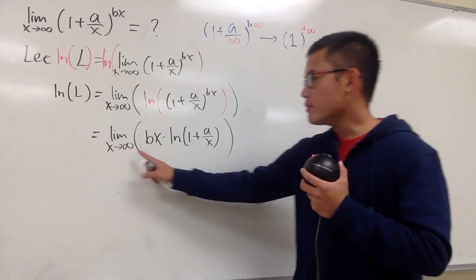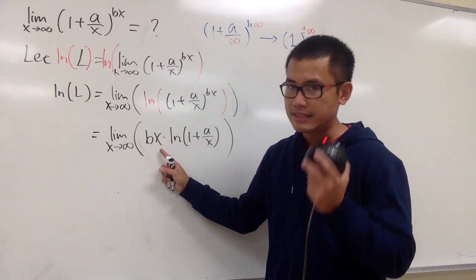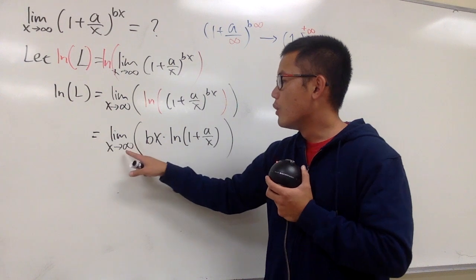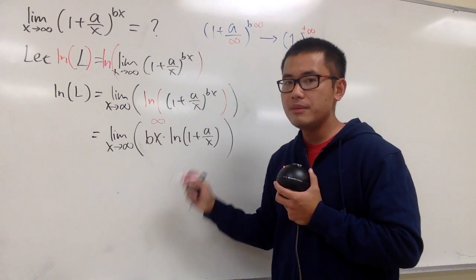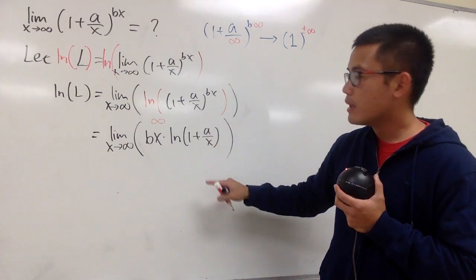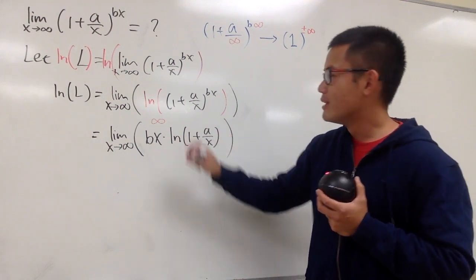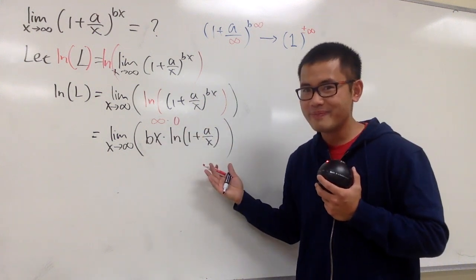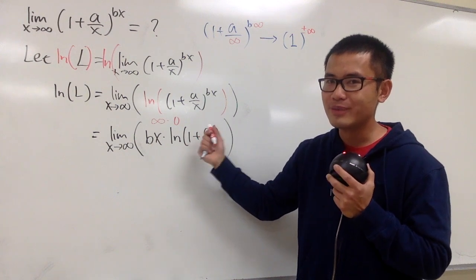If we plug in infinity here: bx gives infinity, and ln(1 + a/x) gives ln(1 + 0) = ln(1) = 0. So we have an infinity times 0 situation, which is also indeterminate. We have to do more work.